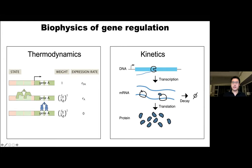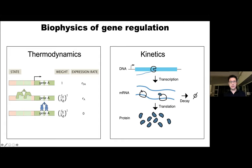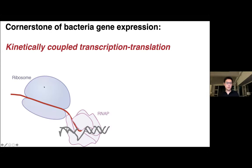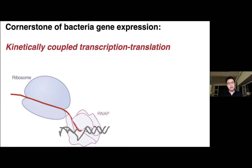RNA and proteins fold while these motors move along, and many proteins and small molecules can interact with the nascent chain, ultimately determining the fate of the RNA and protein. In bacteria especially, the relationship between these two motors is even more intimate: bacteria lack the nuclear envelope, so transcription and translation can take place at the same time, physically associate, and kinetically couple — meaning these two motors move at the same speed.